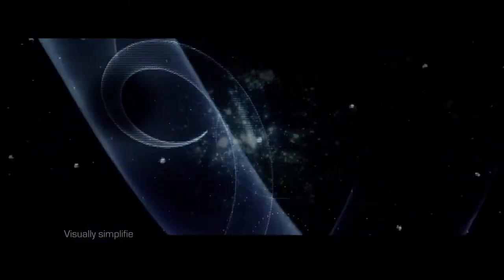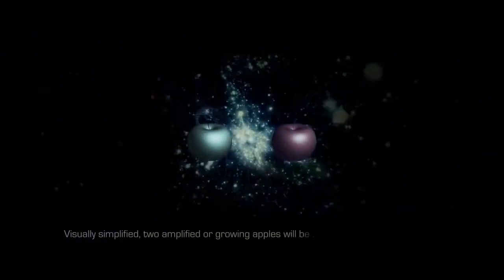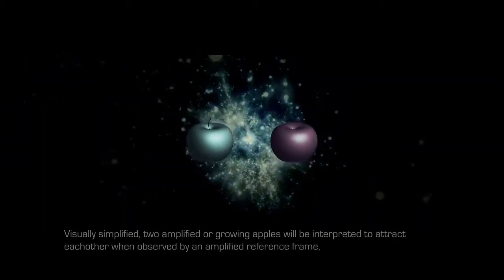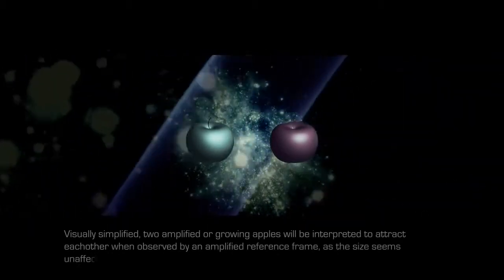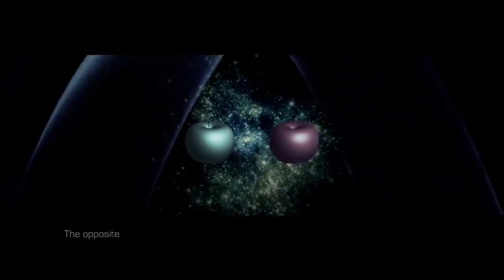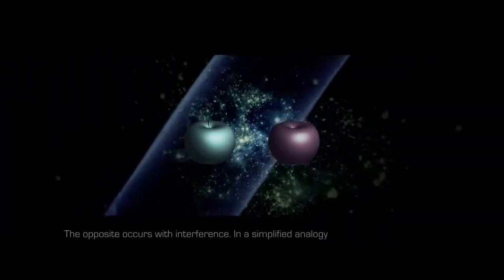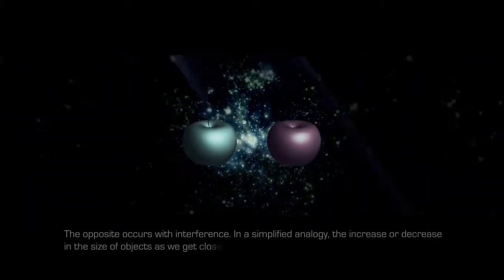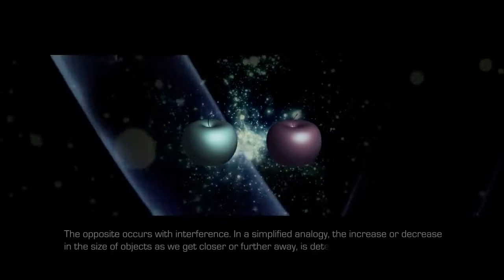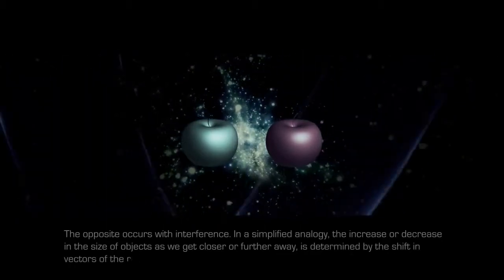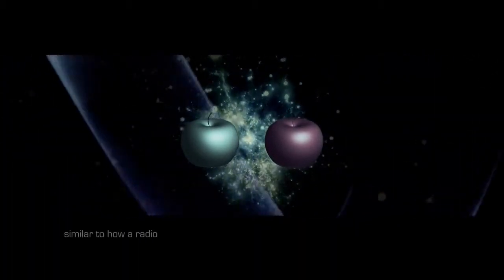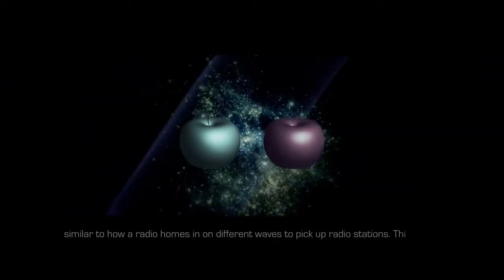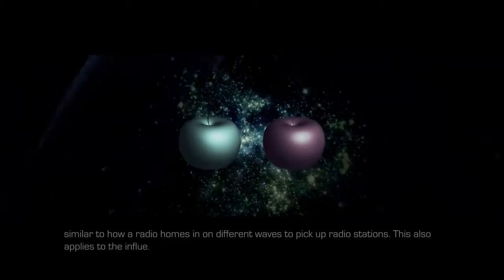This can be illustrated with a logarithmic spiral curve being reduced to a helix curve by the reference frame, making objects spin and move in orbits. Visually simplified, two amplified or growing apples will be interpreted to attract each other when observed by an amplified reference frame, as the size seems unaffected. The opposite occurs with interference. In a simplified analogy, the increase or decrease in the size of objects as we get closer or further away is determined by the shift in vectors of the reference frame, similar to how a radio hones in on different waves to pick up radio stations. This also applies to the influence of gravity.